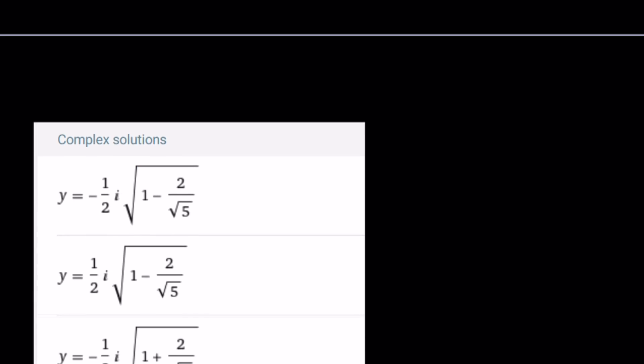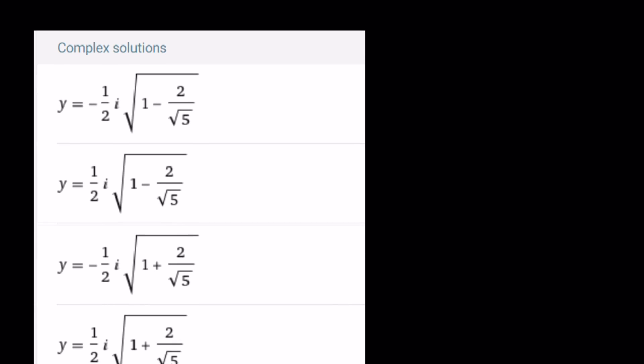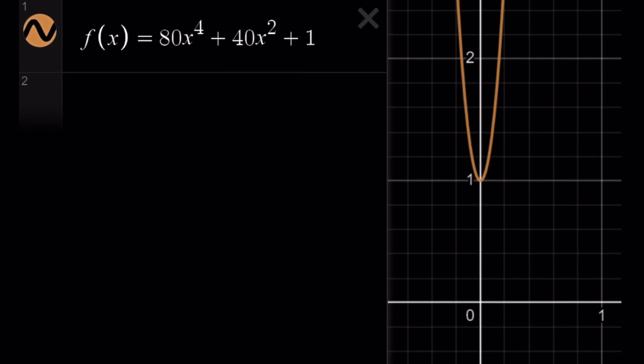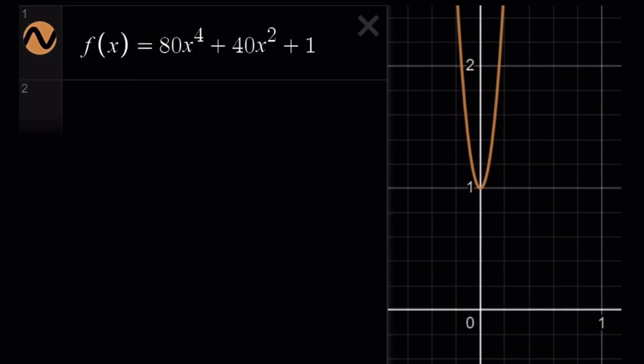First of all, if you find the values, these are the z values, by the way, not y, because I changed the variable later. Anyways, these are going to be the complex solutions we were just talking about, right? Okay, now what happens if you graph this equation? You're going to get something like this, 80x to the 4th plus 40x squared plus, this is a biquartic, I just can't remember which one was which. But anyways, you get the idea, it doesn't have any real roots, it doesn't intersect the x-axis.